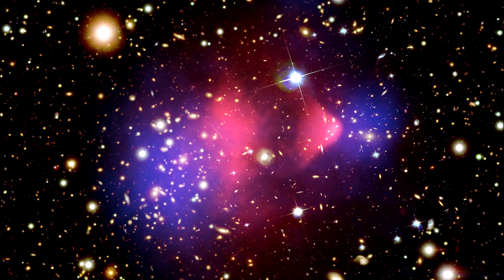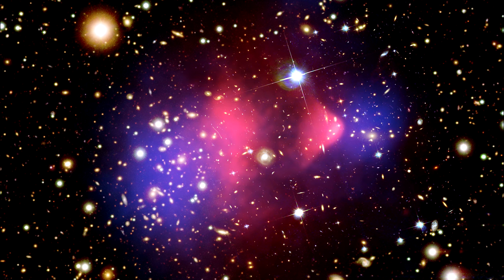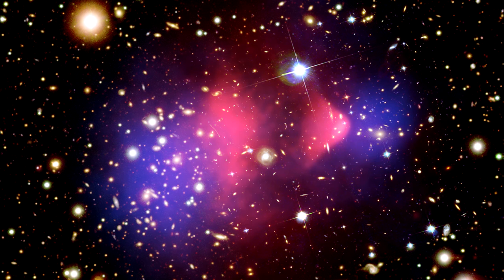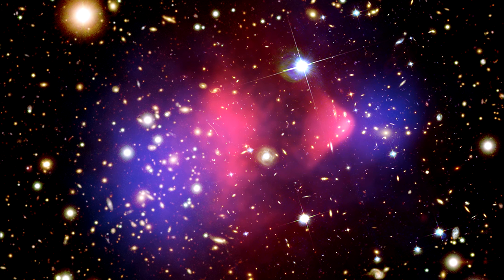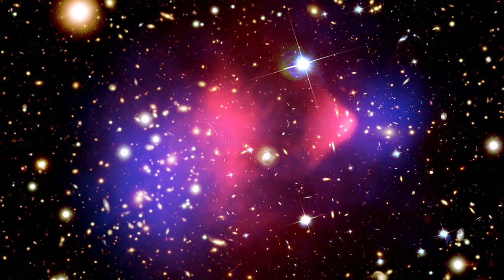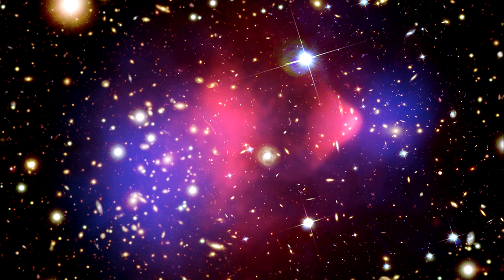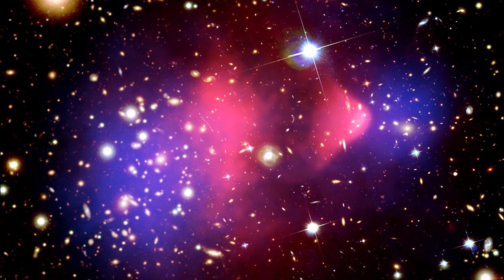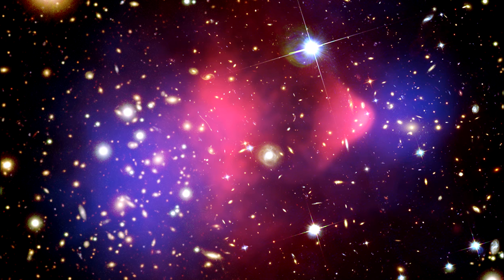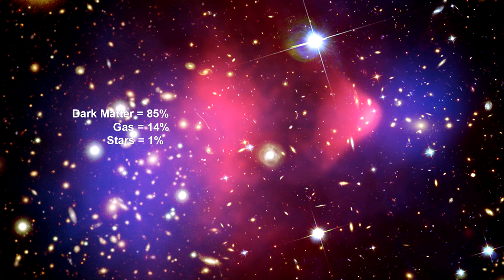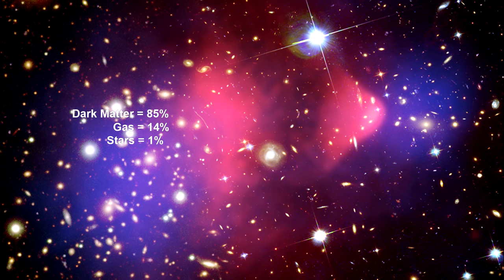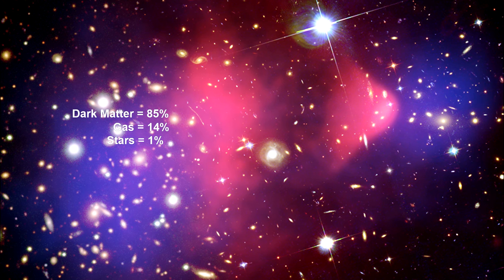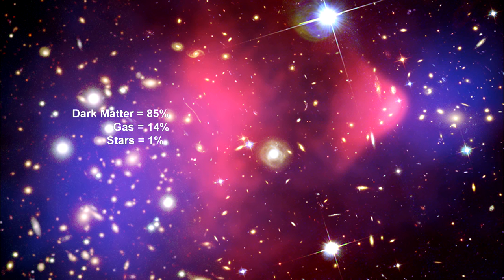This combination had the effect of separating the gas from the dark matter. This separation is considered to be direct evidence that dark matter exists. Measurements indicate that the galaxy clusters on average have 85% dark matter, 14% intergalactic gas, and only 1% stars.